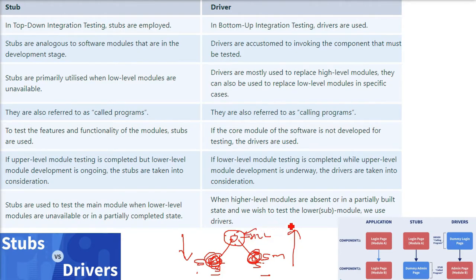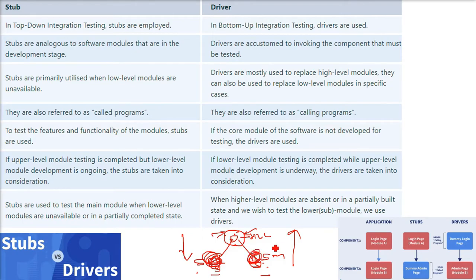We are just mimicking — writing code so that testing can be done. Stubs are analogous to software modules that are still in the development stage. Drivers, on the other hand, are used to invoke the component that must be tested — they are the calling side.